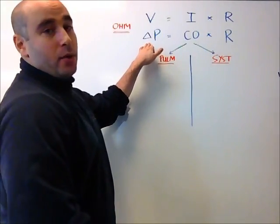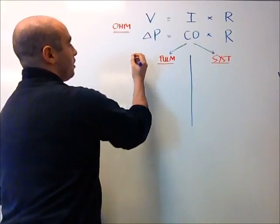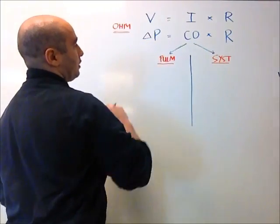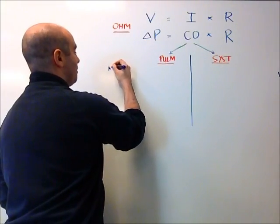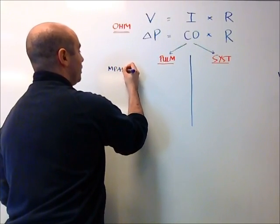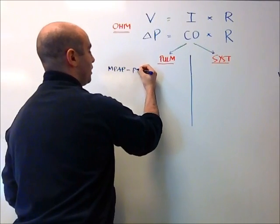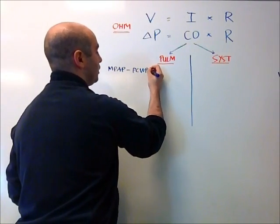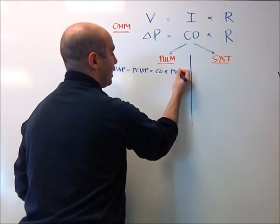So let's write out this equation for each of these two circuits. First, from a pulmonary standpoint, the front pressure, again we're thinking about the pressure gradient, the front pressure on the right side of the heart is the mean pulmonary artery pressure. This is subtracted from the back pressure on the left side of the heart, which is the pulmonary capillary wedge pressure, and this equals the cardiac output times, in this case, the pulmonary vascular resistance.